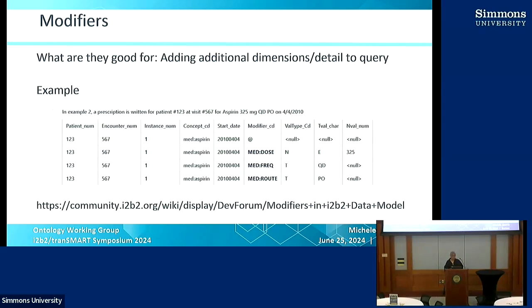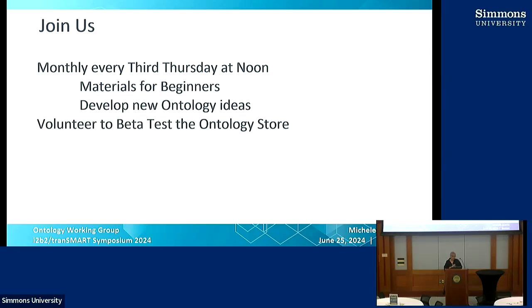My last thing was modifiers, but I think Riven talked about it. This one is in flux — it has power, but we did take them out of the ENACT ontology because it was hard to harmonize. Hopefully in the future we find a better way to represent modifiers, but they do allow you to add dimension to a given query. We meet every third Thursday at noon. In the near future we'll be pulling together materials for beginners, tackling new ontology ideas, and improving existing ontologies like the lab and med ontologies. We're also looking for people to beta test the ontology store.